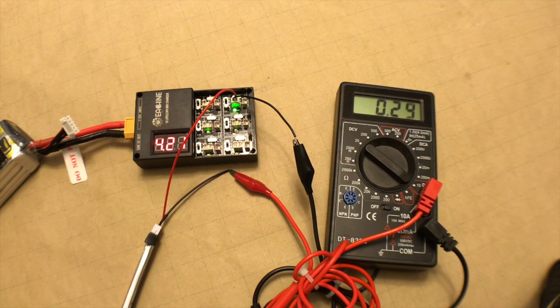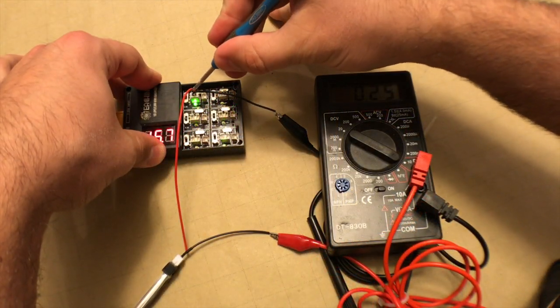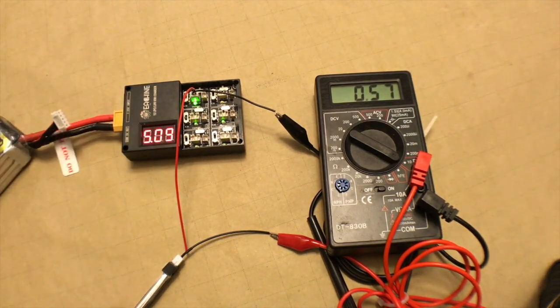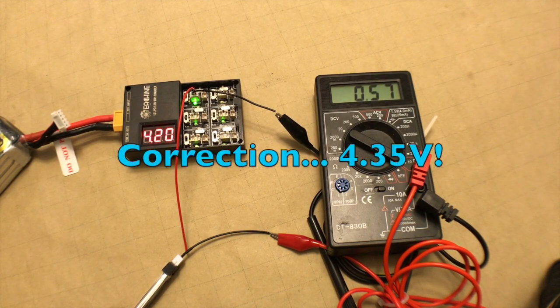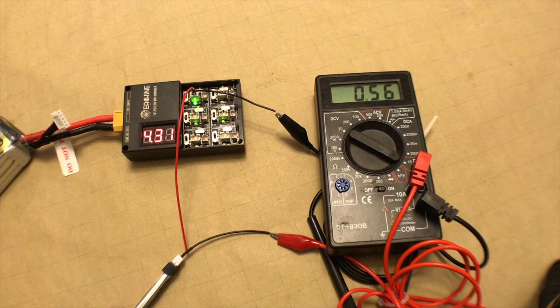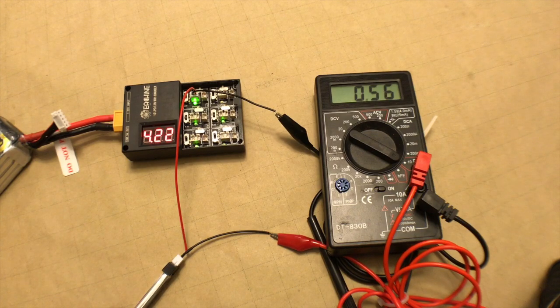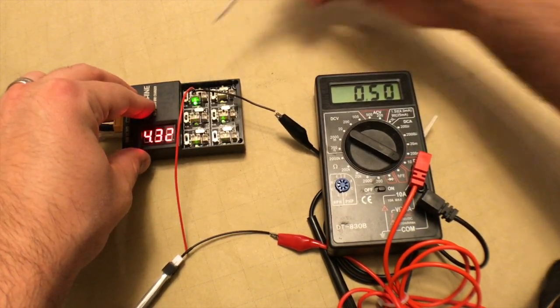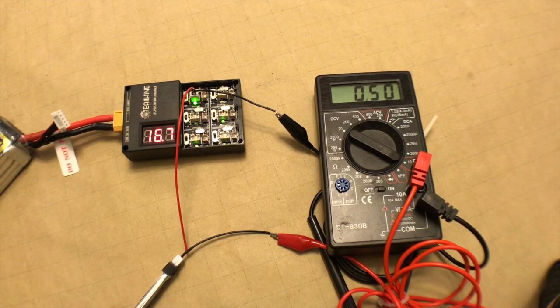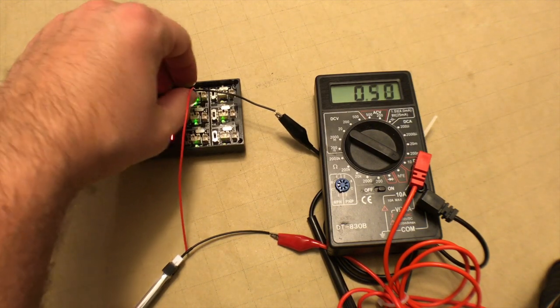We're going to test out the 0.6 amp output. So at 4.35 volts and 0.6 amps we have roughly 0.56 or 0.57 amps, so that one's actually a little bit under. We noticed with the other setting it was a little bit over. Let's go ahead and move that down to the regular 4.2 volts and now your output is closer to half an amp. So it does not output the full 0.6 amps that is stated on the charger.